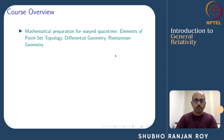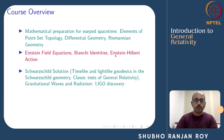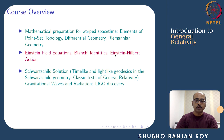Once we are done with this mathematical preparation, we can write down the Einstein field equations and associated quantities. Then our task would be to study simple solutions of the Einstein field equations, namely the Schwarzschild solution. We will see how we can derive this and we will also explore this geometry in detail by looking at timelike and lightlike geodesics in the Schwarzschild geometry, which forms the arena for the classic tests of General Relativity.